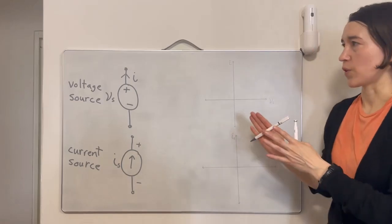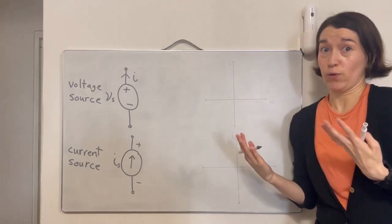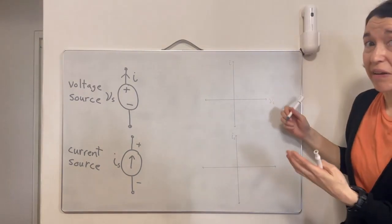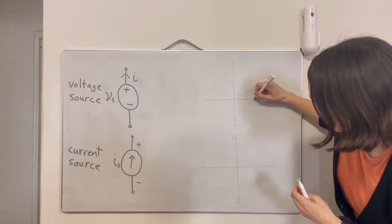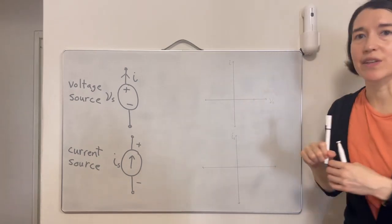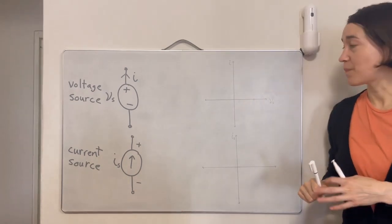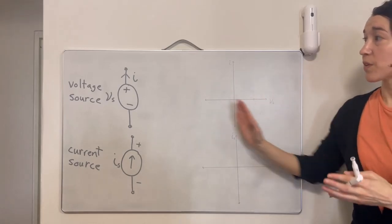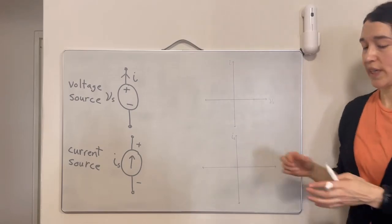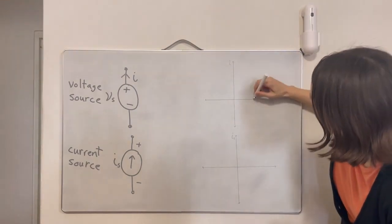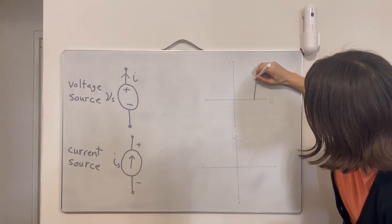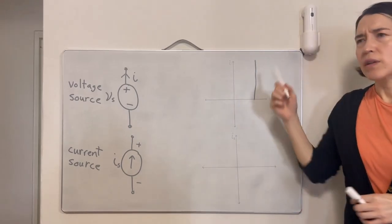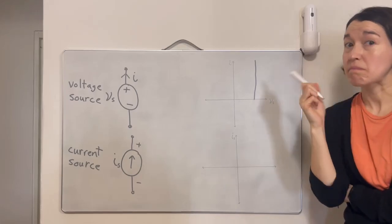Because this voltage source always gives the same voltage, we can determine its fixed value. Let's say it gives a positive voltage, so this would be on the positive voltage axis. In terms of current, it can give any current — starting from zero all the way up to positive. And can it give a negative current? Yes, in fact it can.